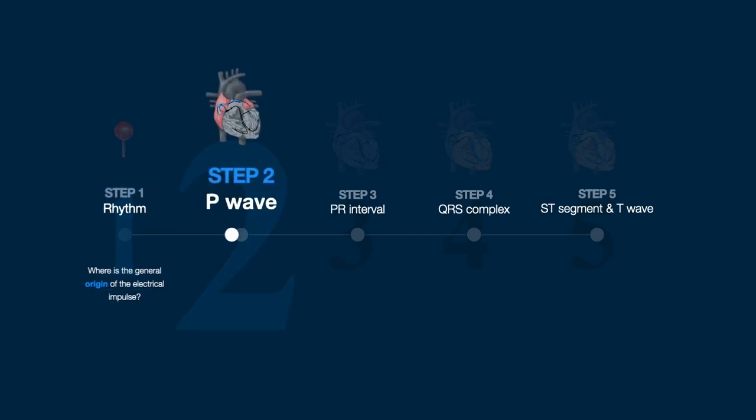Step 2: Describe the P-wave. The P-wave represents atrial depolarization, therefore assessing the P-wave can provide information regarding the physiological and anatomical status of the atria. Additionally, this step helps to confirm whether the cardiac pacemaker is at the sinoatrial node.